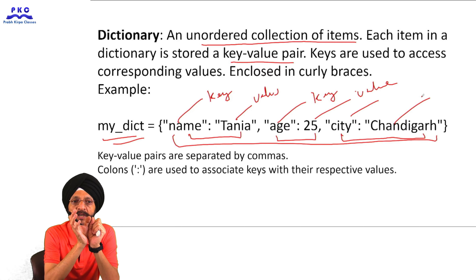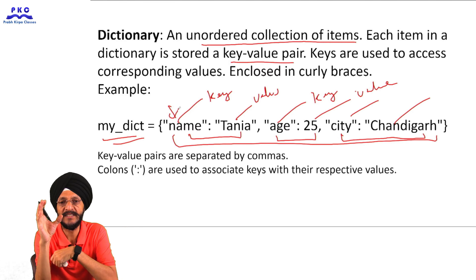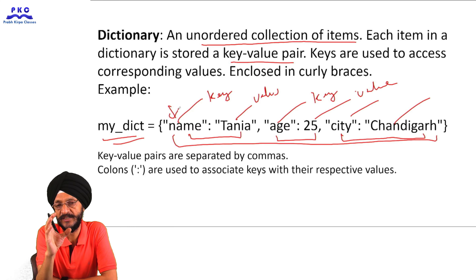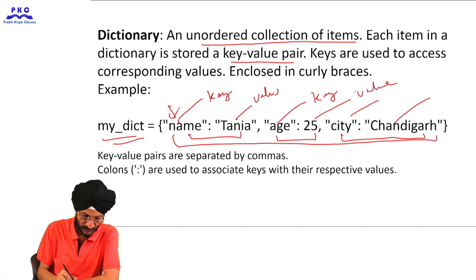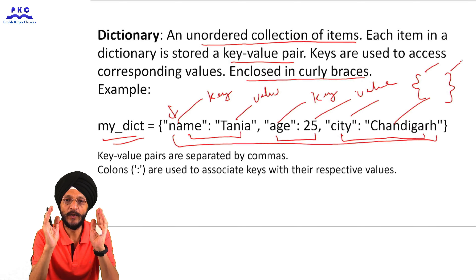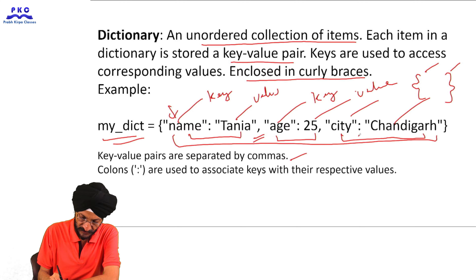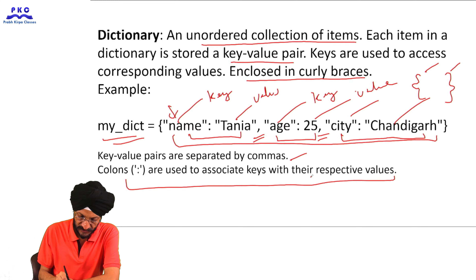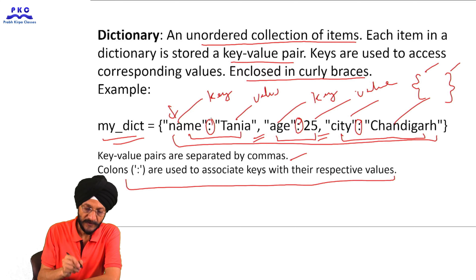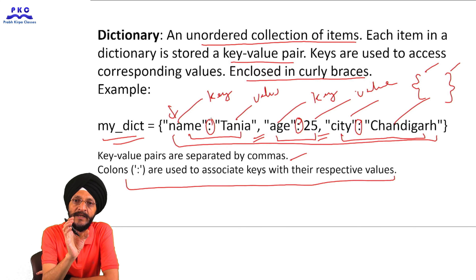When we want to access any corresponding value in a dictionary, we access the keys. We cannot directly access values in a dictionary — we must use the keys. Key-value pairs are enclosed in curly braces and separated by commas. Colons are used to associate each key with its respective value.